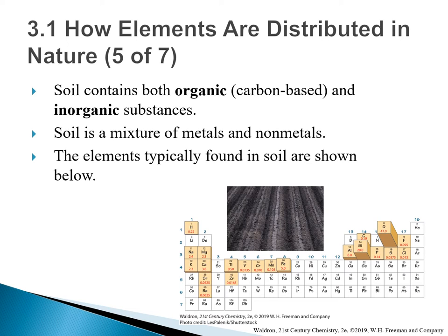Soil contains both organic and inorganic substances, and organic substances are carbon-based. Soil is a mixture of metals and non-metals. The elements typically found in soils are shown below, with oxygen being the most abundant in nature, followed by silicon.